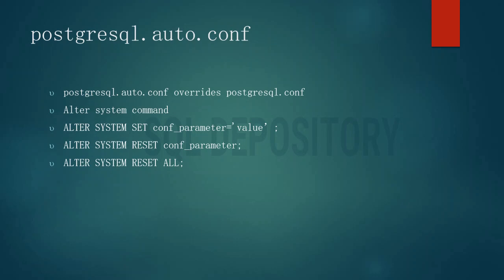postgresql.auto.conf is the config file that overrides postgresql.conf, which means if a parameter value is changed in postgresql.auto.conf then it will overwrite the parameter values in postgresql.conf.